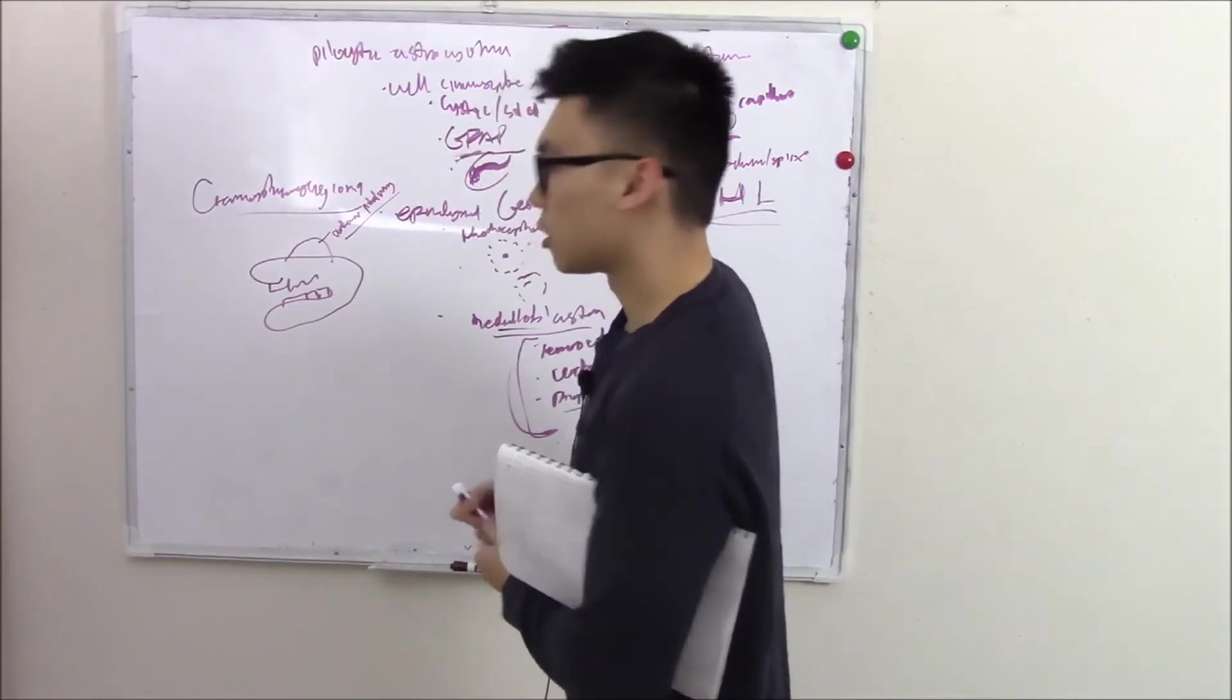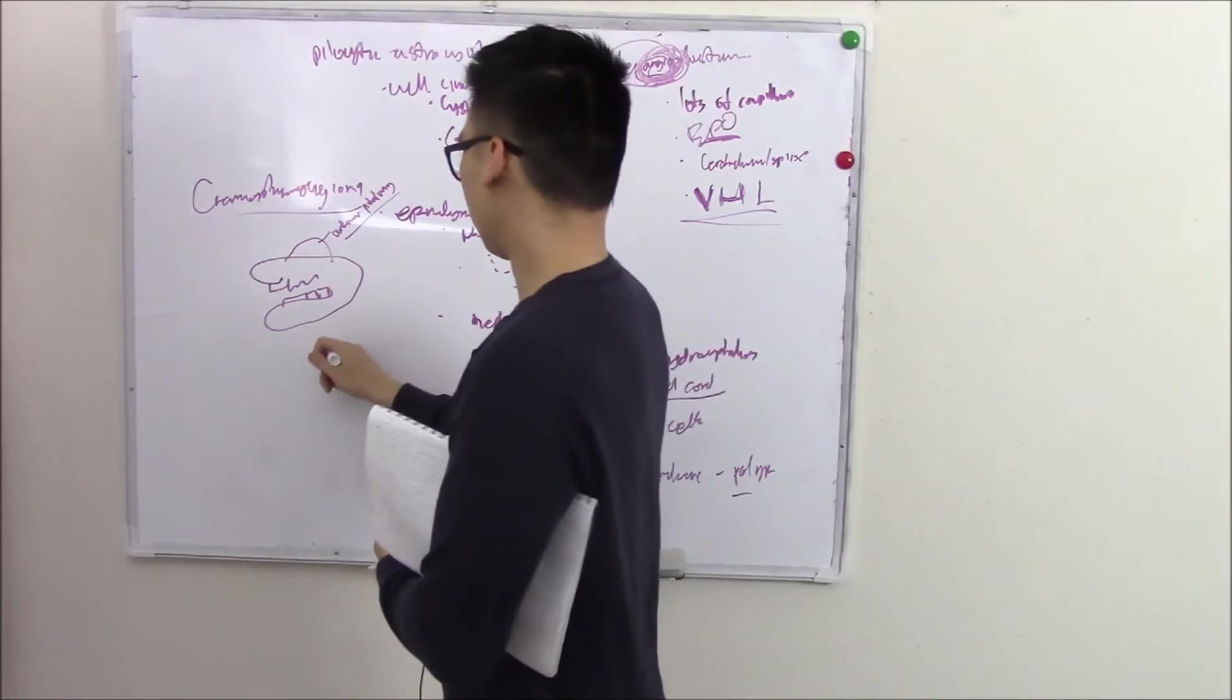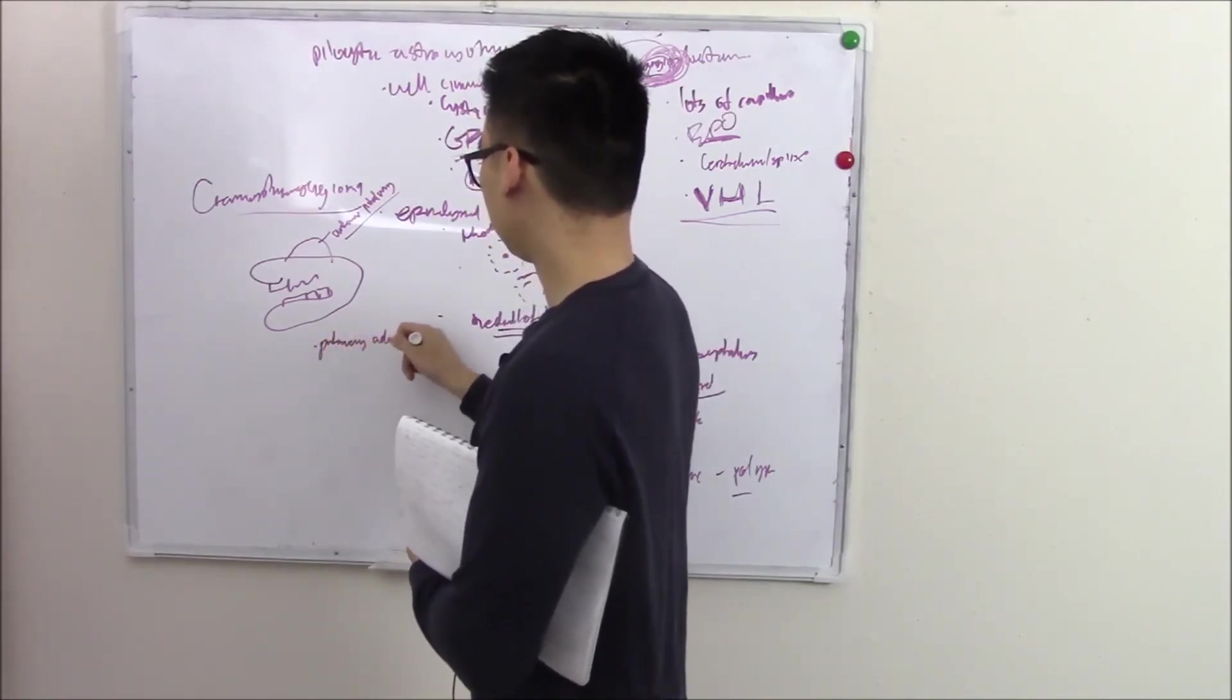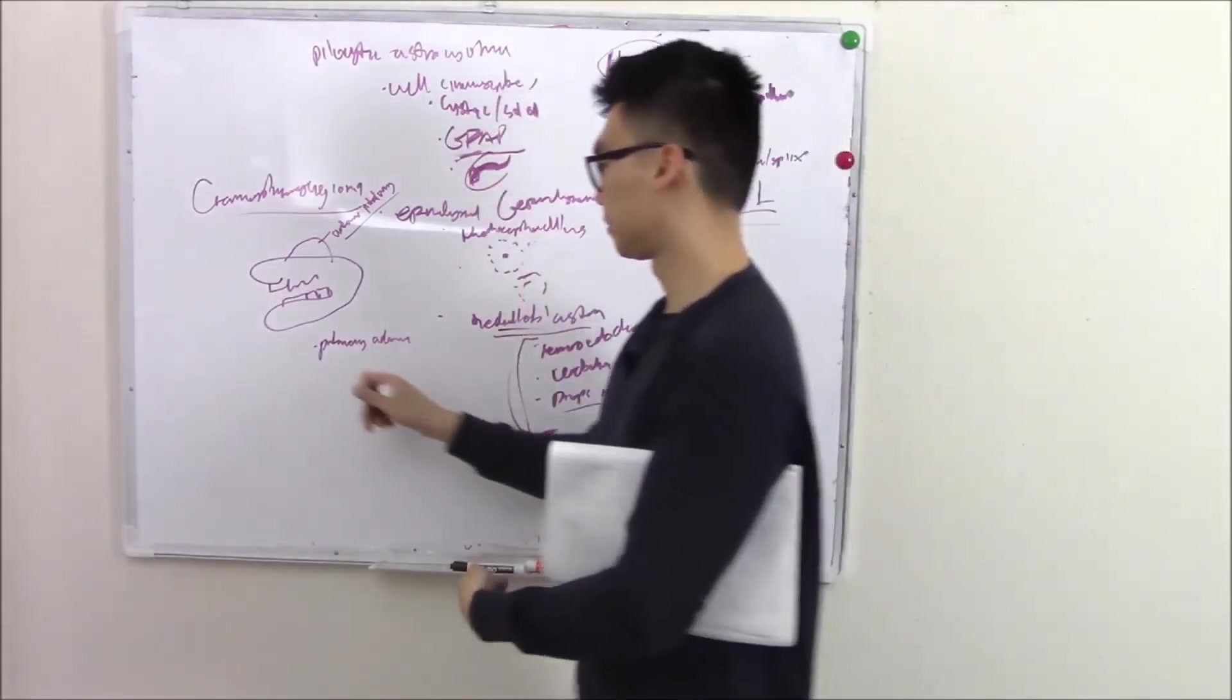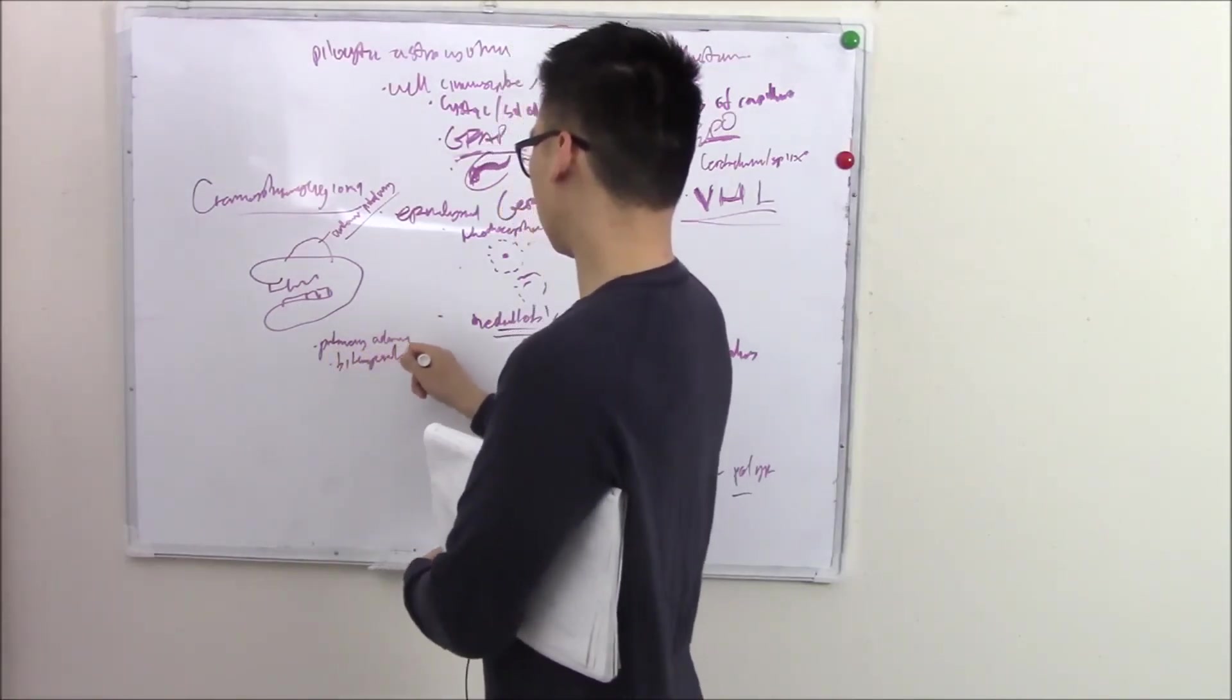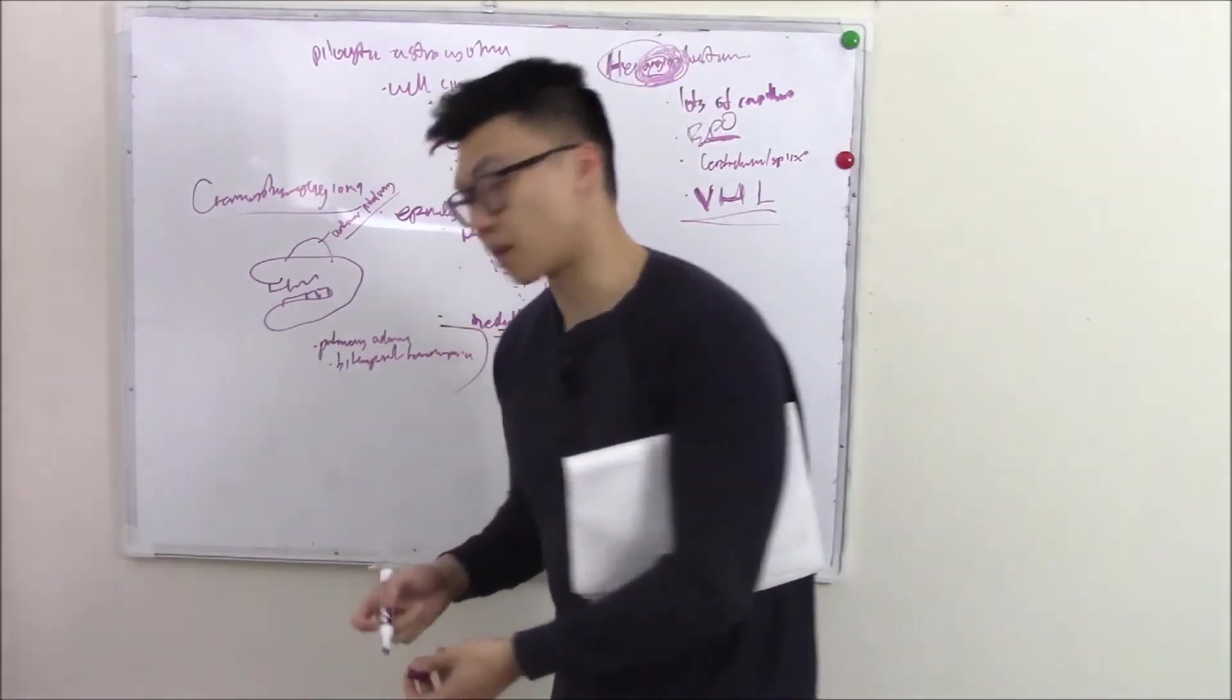So in adults, if that pouch goes awry, we can have pituitary adenomas. Pituitary adenomas. And it's right next to your optic chiasm. It can cause bitemporal hemianopia. Bitemporal hemianopia. That's like the classic sign. But this is in adults and we're not talking about adults here. We're talking about kids.